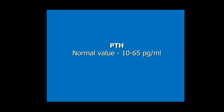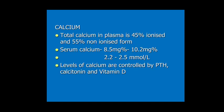Normal parathyroid hormone value is 10 to 65 picograms per ml. Total calcium in plasma is both ionized and non-ionized — 45% is ionized and 55% is non-ionized. Normal serum calcium is 8.5 to 10.2 mg per deciliter, or 9 to 11 by some references, and 2.2 to 2.5 millimoles per liter. Calcium levels are controlled by three substances: parathyroid hormone, calcitonin (secreted by the parafollicular C cells), and vitamin D.